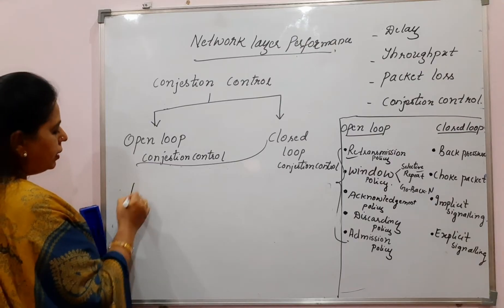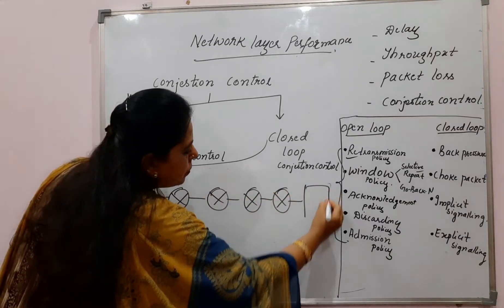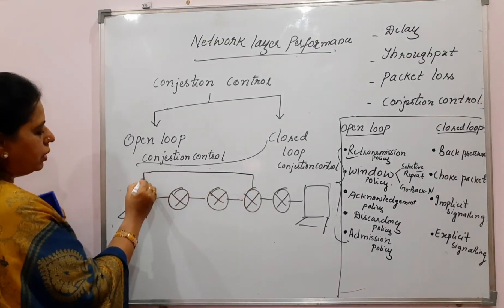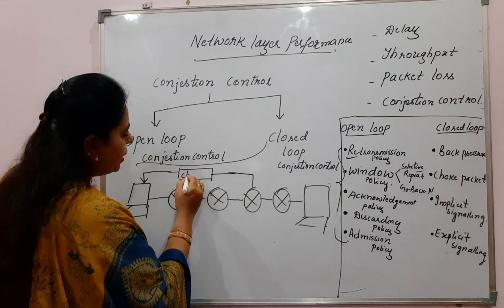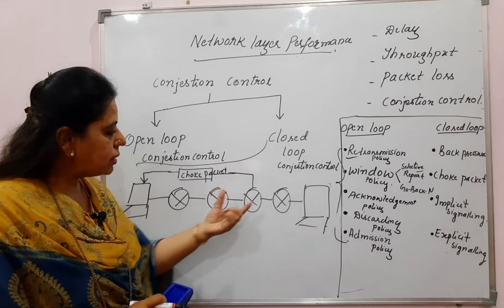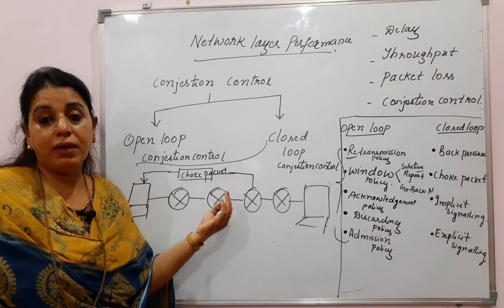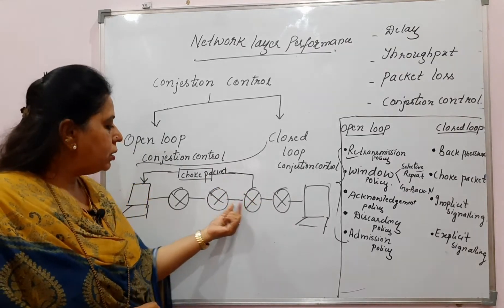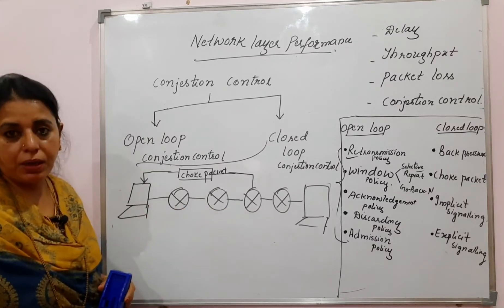The choke packet mechanism works differently. Whichever router is experiencing congestion sends the information directly to the sender using a special packet called a choke packet, requesting the sender to slow down. In back pressure, the router notifies only its upstream node; in choke packet, the congested router communicates directly with the sender, bypassing intermediate nodes.